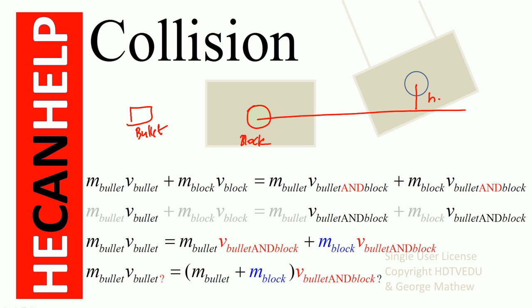The momentum conservation equation states: momentum of the colliding masses before collision equals momentum after collision. So: mass of the bullet times velocity of the bullet, plus mass of the block times velocity of the block — this is before collision — equals mass of the bullet plus mass of the block, times velocity of the bullet-and-block together after collision.